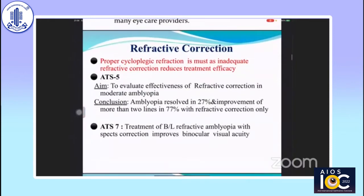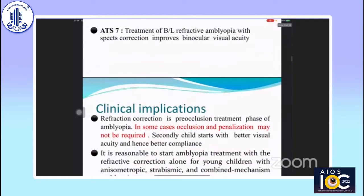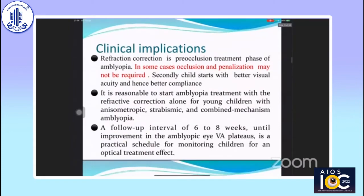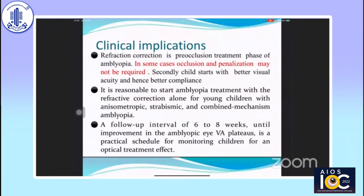In ATS-5, the aim was to evaluate effectiveness of refractive correction alone in moderate amblyopia. They concluded amblyopia resolved in 27% of patients and improvement of more than two lines was seen in 77% of patients with refractive correction only. The clinical implication: refractive correction is the pre-occlusion treatment phase of amblyopia. In some cases, occlusion and penalization may not be required, and the child starts with better visual acuity and hence better compliance. It is reasonable to start amblyopia treatment with proper refractive correction alone for young children with anisometropic, strabismic, and combined mechanism amblyopia, with follow-up after six to eight weeks until improvement plateaus.